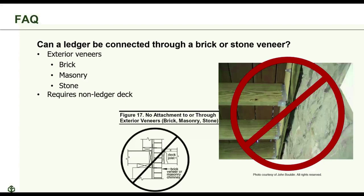Can a ledger be connected through brick or stone veneer? The DCA-6 would require a non-ledger deck when constructed at a dwelling with a brick masonry or stone exterior veneer. If using the IRC or engineering design, there may be new products on the market that allow this connection — check the ESR report and manufacturer's installation instructions. Attachment directly to the veneer is not permitted in any design method in the code.